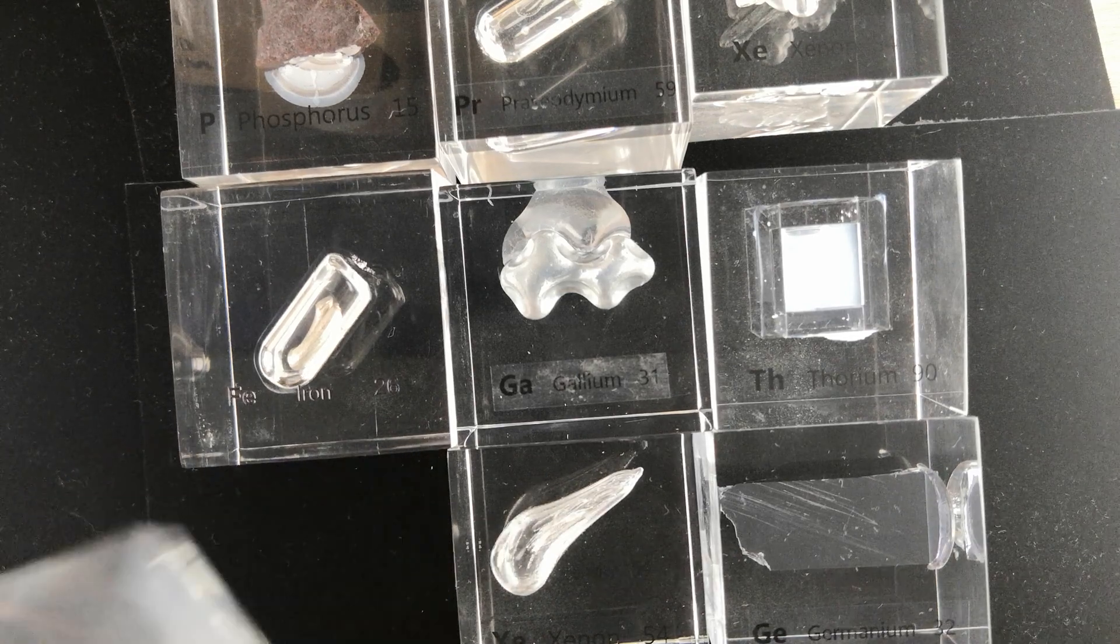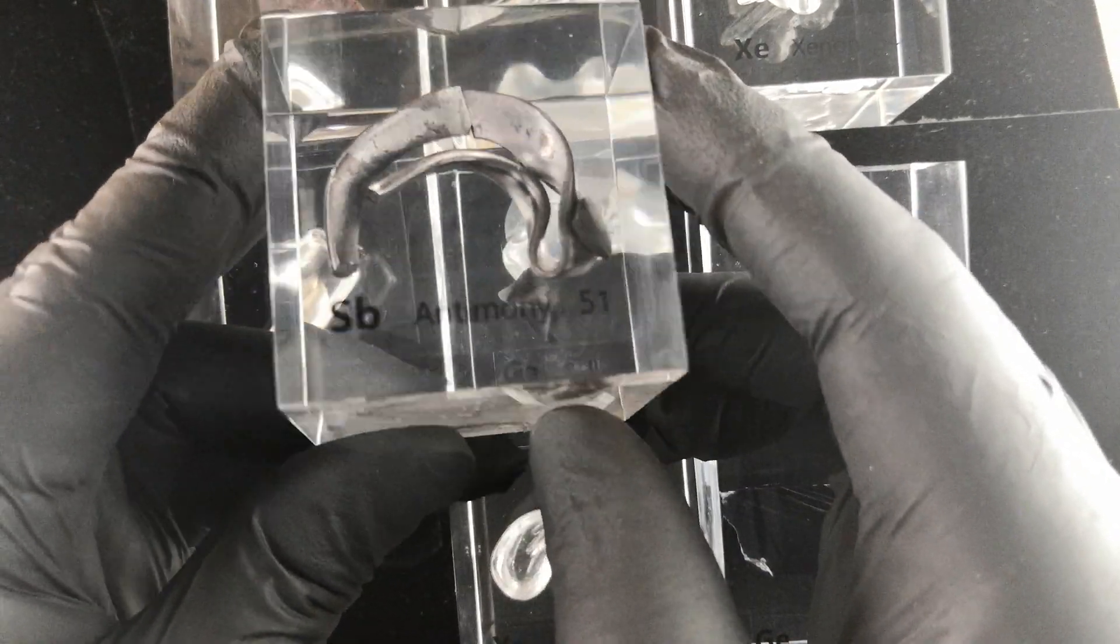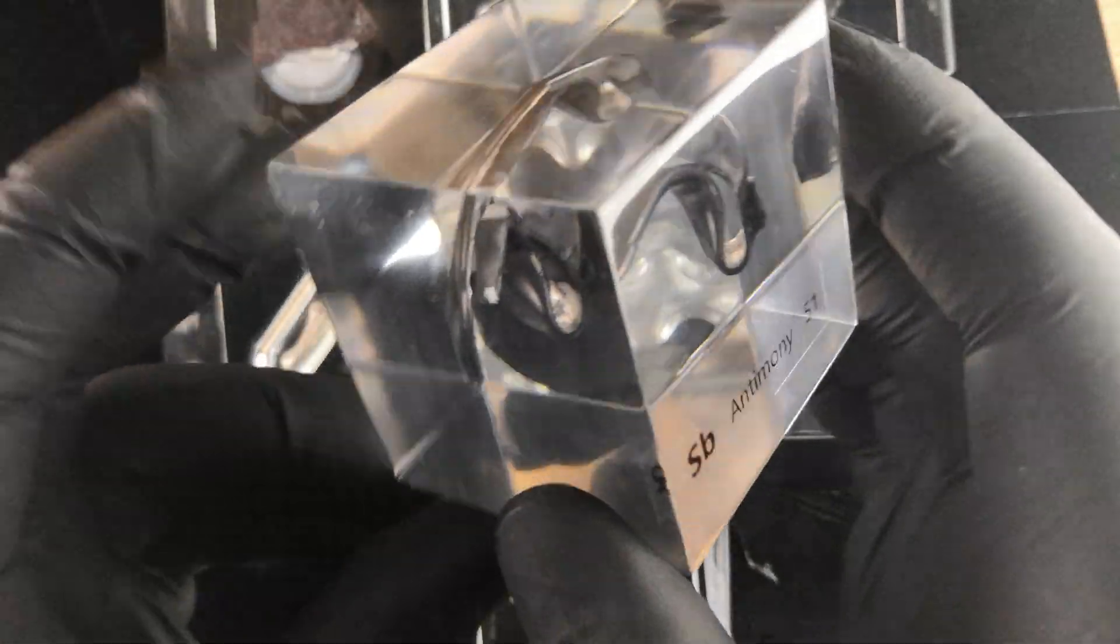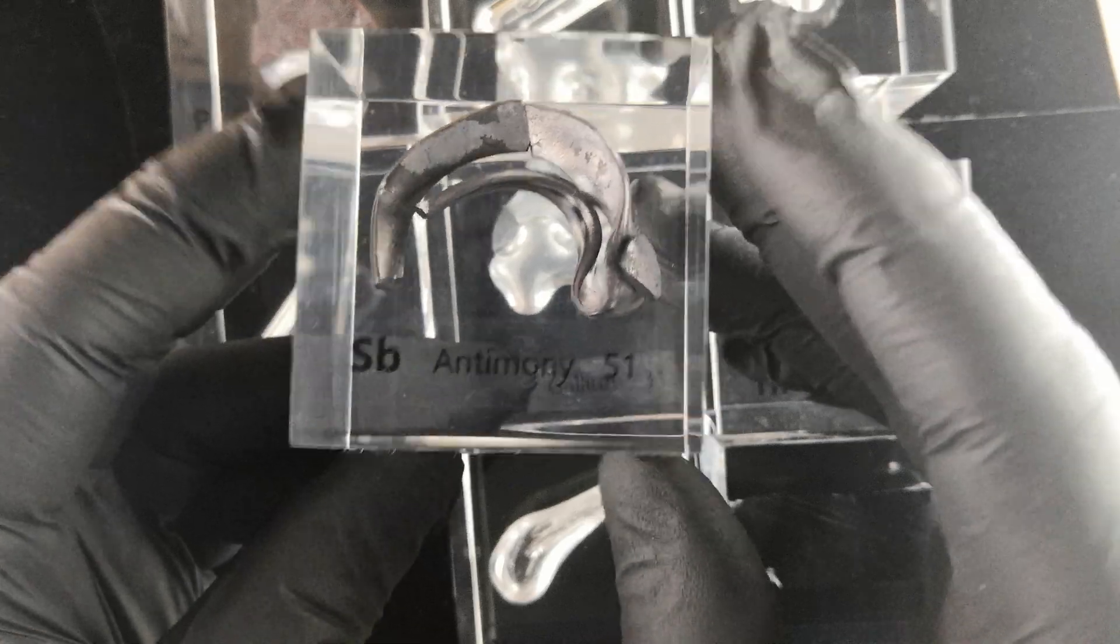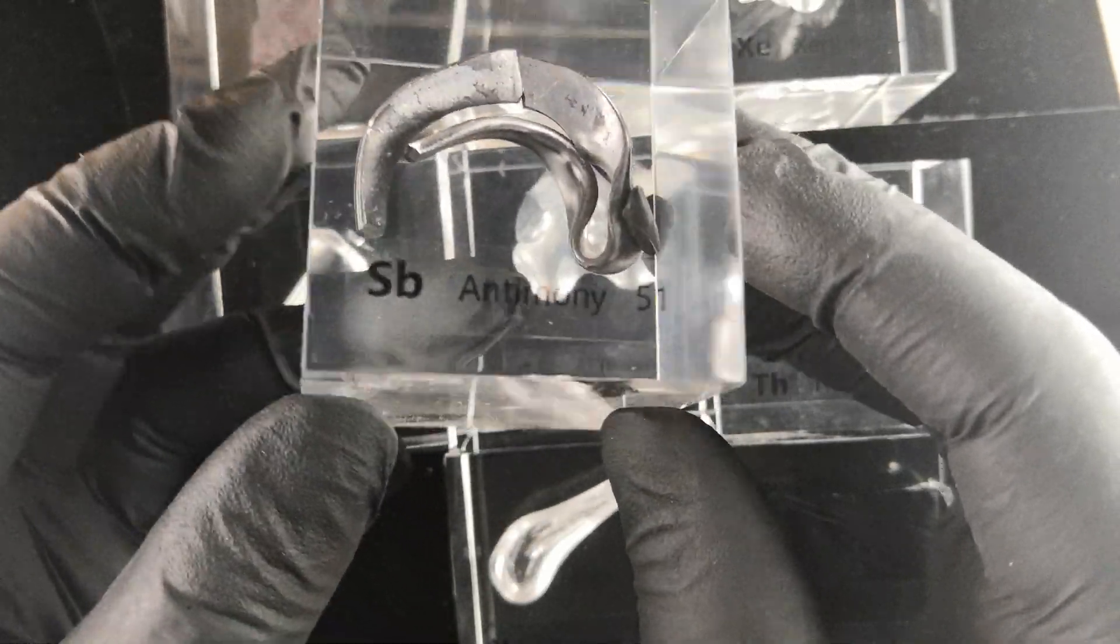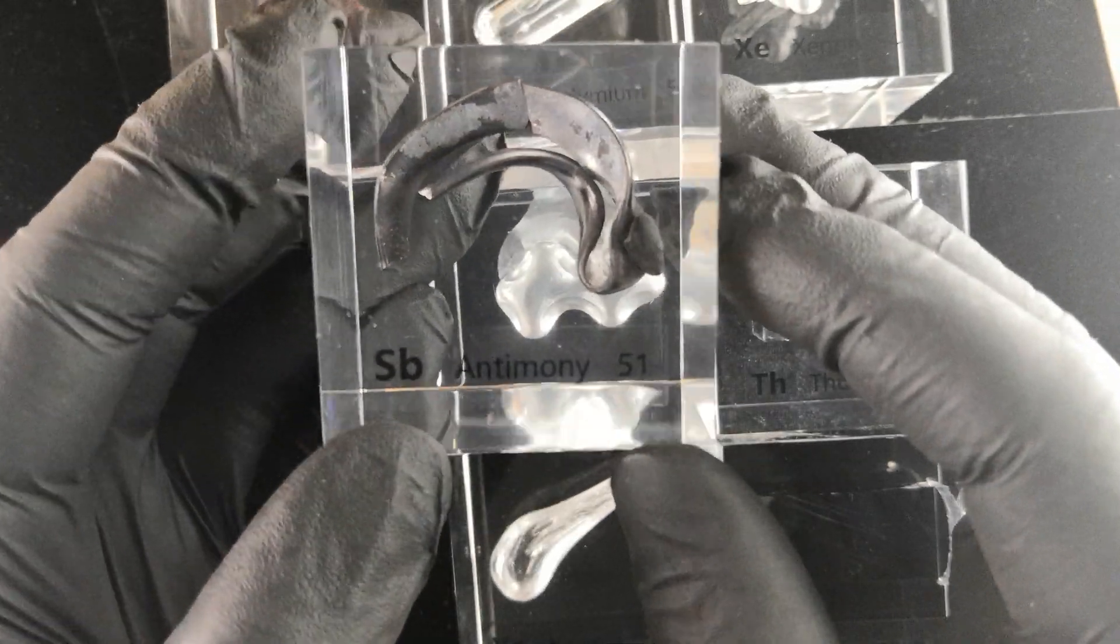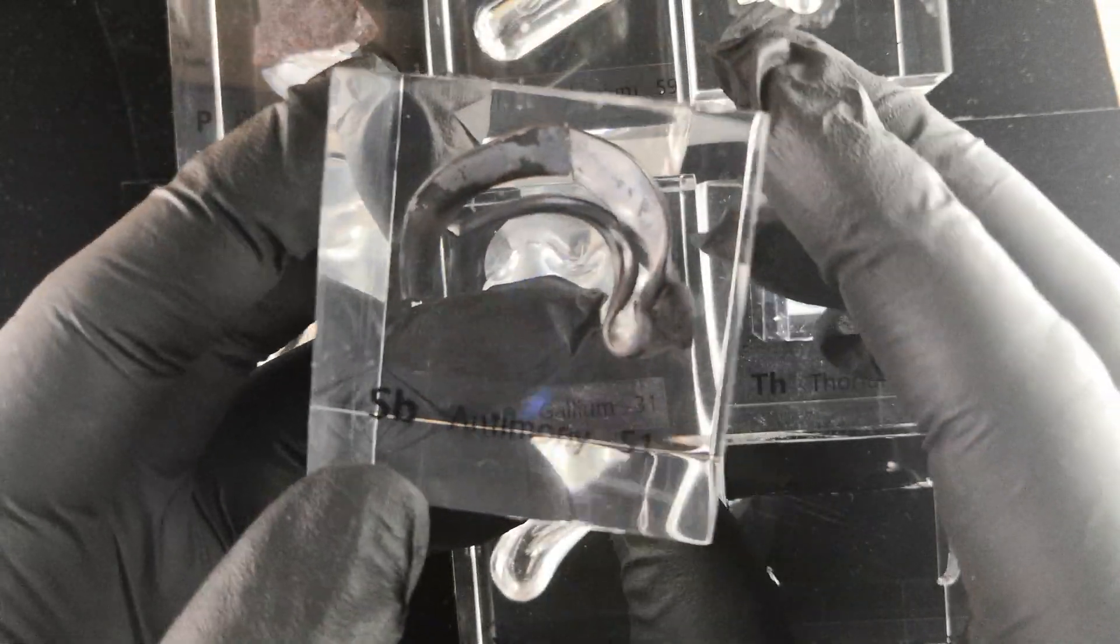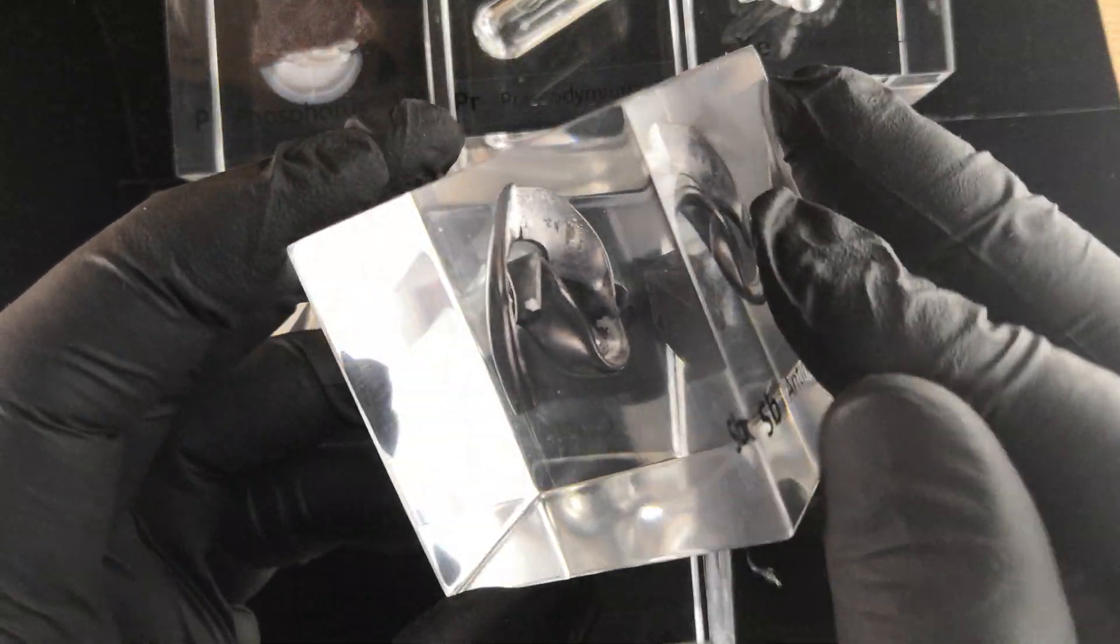The most common type of fail that we have are simply mislabeling. The cube looks perfectly fine, it's sellable, but this is not Antimony, this is Selenium. And that label is in there, it cannot be replaced. So, bummer, but you know, that's the wrong element.